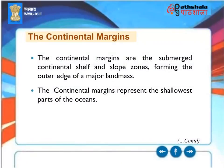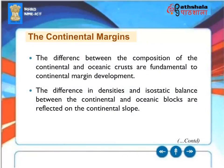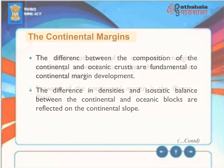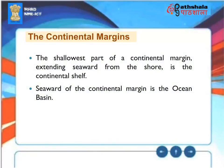The continental margins are the submerged continental shelf and slope zones forming the outer edge of a major landmass. They represent the shallowest parts of the oceans. The difference between the composition of continental and oceanic crusts is fundamental to continental margin development. The difference in densities and isostatic balance between continental and oceanic blocks are reflected on the continental slope. The shallowest part of a continental margin extending seaward from the shore is the continental shelf. Seaward of the continental margin is the ocean basin.